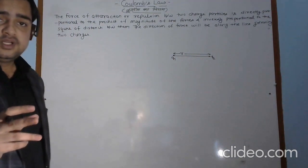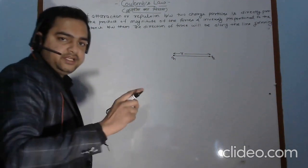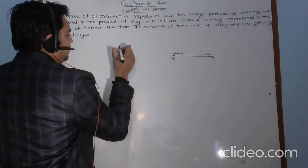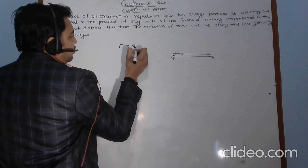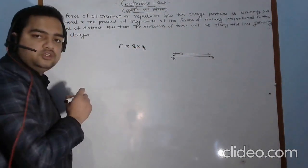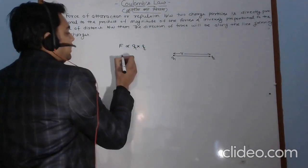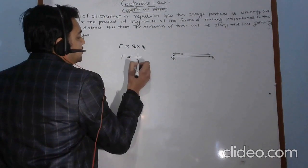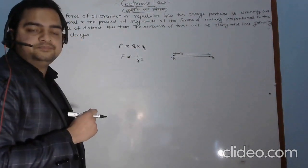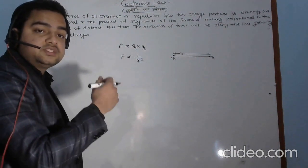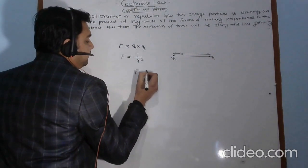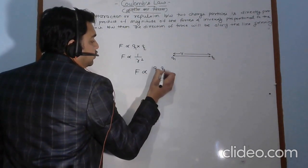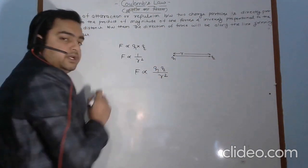Then according to Coulomb's law, the magnitude of the force acting between these two charge particles is directly proportional to the product of the magnitude of these two charges q1 into q2, and inversely proportional to the square of the distance between them. If I combine these two results, then I will get F is directly proportional to q1 into q2 upon r square.